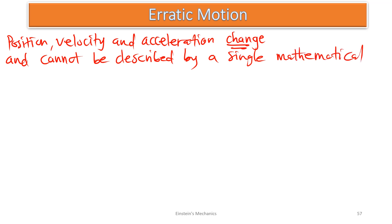Unlike continuous motions where we can use a specific function to determine velocity, for erratic motion, at a particular point it has its own position function, and at a different point it has a different position function. So throughout the journey it is going to have various forms of functions.